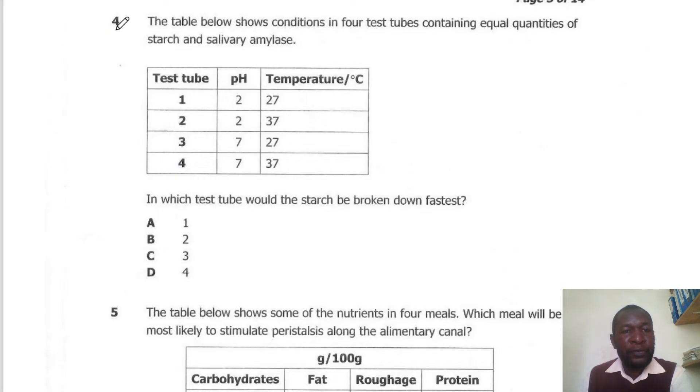Question 4. The table below shows conditions in four test tubes containing equal quantities of saliva and amylase. In which test tube would the starch breakdown the fastest? You need a neutral pH and a higher temperature. So the correct answer here is 4. We need pH 7 and temperature 37 degrees Celsius.